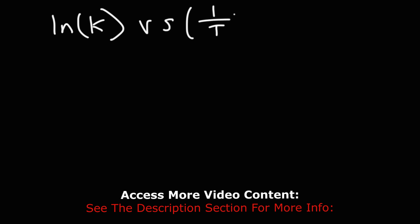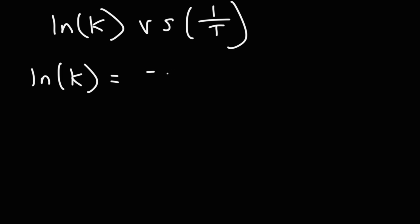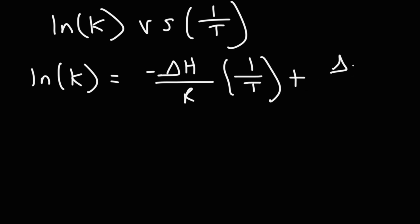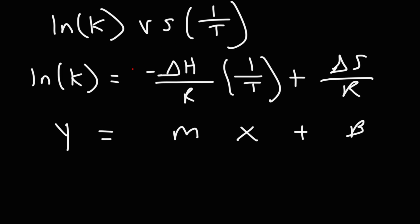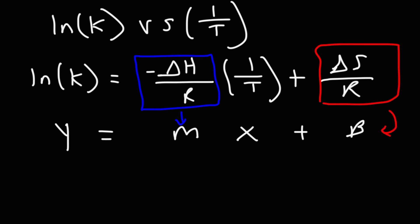If you plot the natural log of the equilibrium constant against the reciprocal of temperature, you get a straight line. The formula describing that linear equation is: ln K = (–ΔH/R)(1/T) + ΔS/R. This is in slope-intercept form, where Y is ln K plotted on the Y-axis, X is 1/T plotted on the X-axis, negative delta H over R is the slope, and delta S over R is the Y-intercept. So from a straight-line plot of ln K versus 1/T, you can extract both enthalpy and entropy.